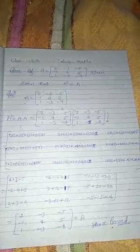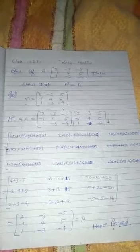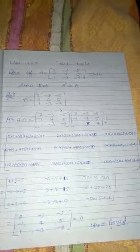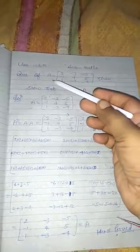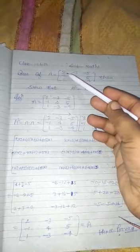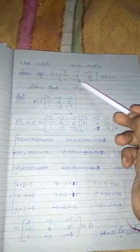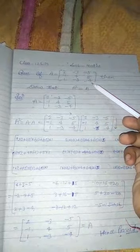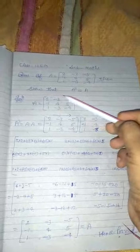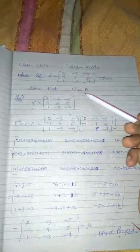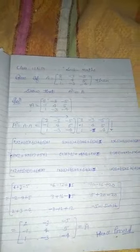Today we will discuss another question. If A is equal to the matrix [2, -3, -5; -1, 4, 5; 1, -3, -4], then show that A squared is equal to A.